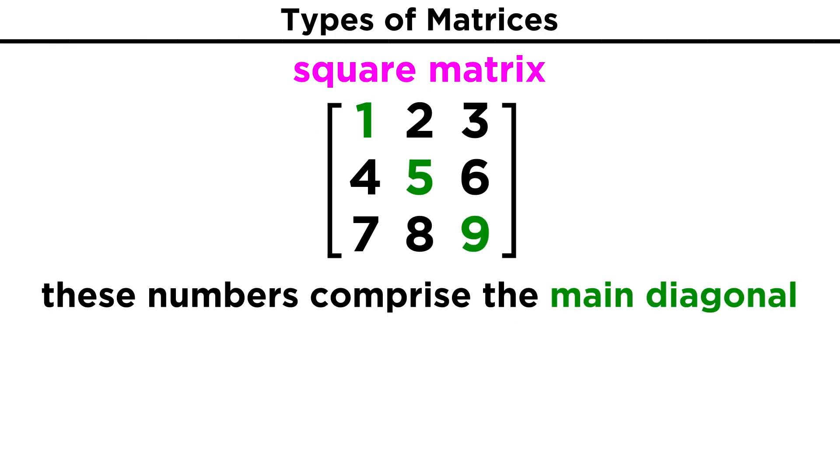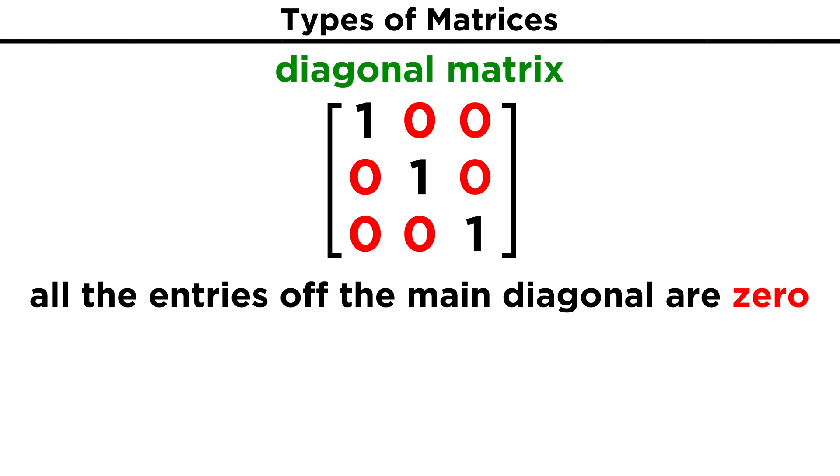In a square matrix, the entries going from the top left down to the bottom right comprise the main diagonal of the matrix. We can refer to a matrix as a whole as a diagonal matrix if all the entries that are not part of the diagonal are zero.